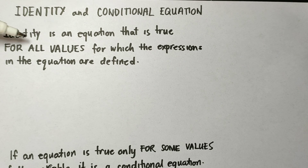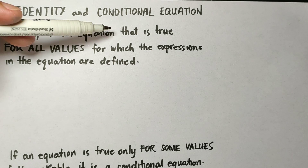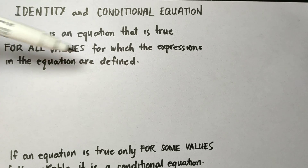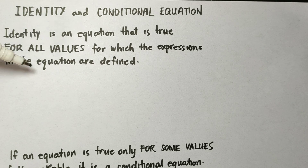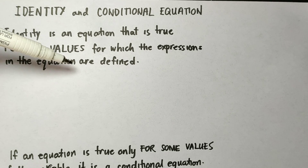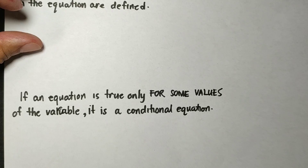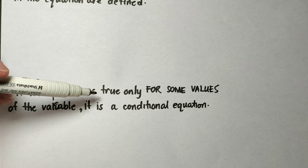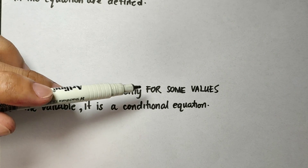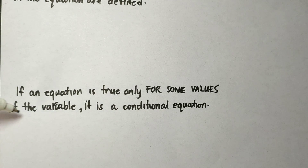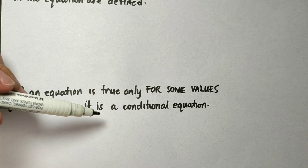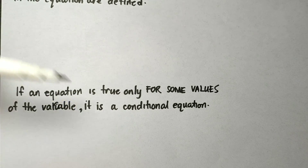When we say identity, it is an equation that is true for all values for which the expressions in the equation are defined. If an equation is true only for some values of the variable, it is a conditional equation.